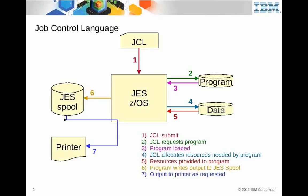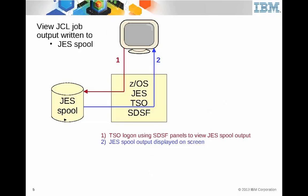The concept of JCL: it enters the system, gets the program, allocates resources such as data sets, and can write output. If you write things into the spool, you can use SDSF to look at the JES spool output. If data is on a data set, you can also use TSO to look at data sets. You can use SDSF panels to view the JES spool output and it gets displayed on your terminal. We'll talk more about the JES spool later.